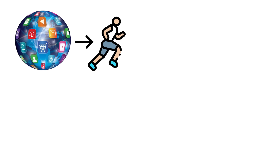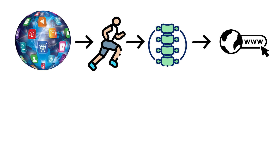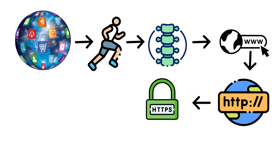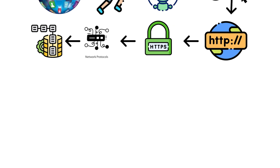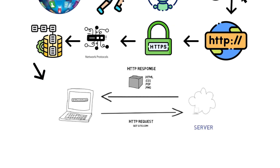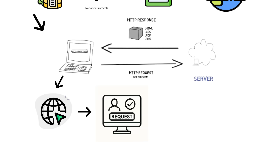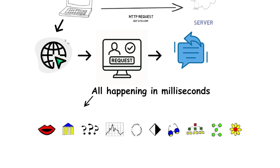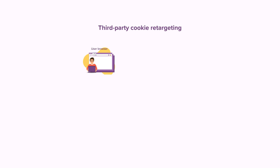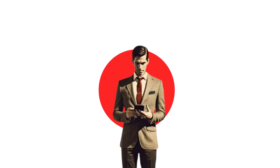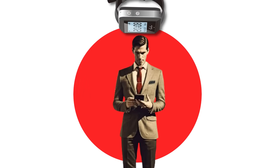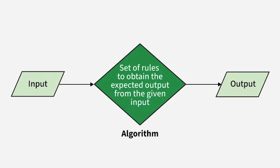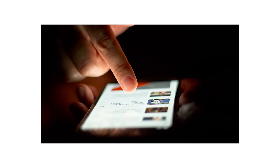The surface web runs on the standard backbone of the internet, HTTP and HTTPS, the protocols that move data between your device and remote servers. Each click sends a request; each request fetches a response, all happening in milliseconds. It's so fast you forget the complexity underneath. Cookies track your activity. Ads follow your gaze. And algorithms quietly tailor your experience.